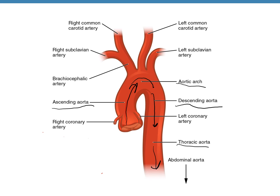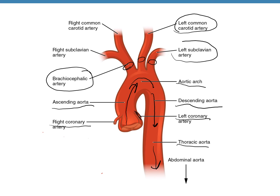The thoracic aorta later becomes the abdominal aorta. The first two branches from the ascending aorta are the right and left coronary arteries, which supply the myocardium of the heart. The aortic arch has three branches: on the right side, the brachiocephalic artery; then the left common carotid artery; and the left subclavian artery.